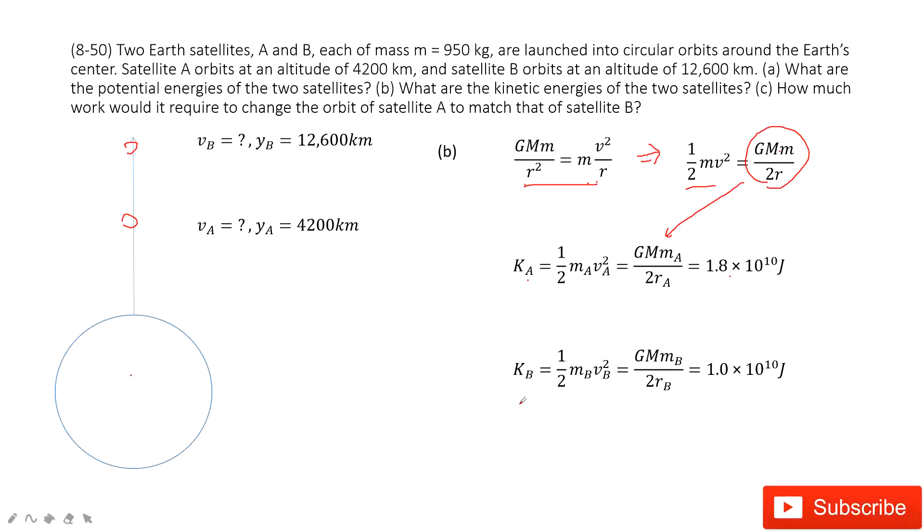Similarly, for satellite B, the kinetic energy for satellite B, kB equals one-half mB vB squared. And then you input all the known quantities and get the final answer.